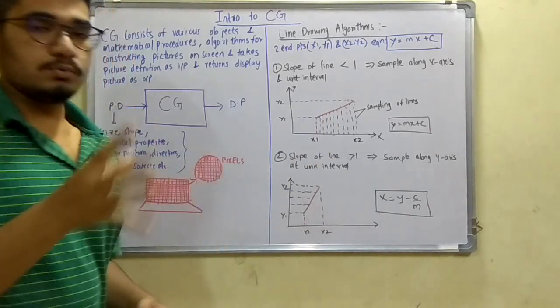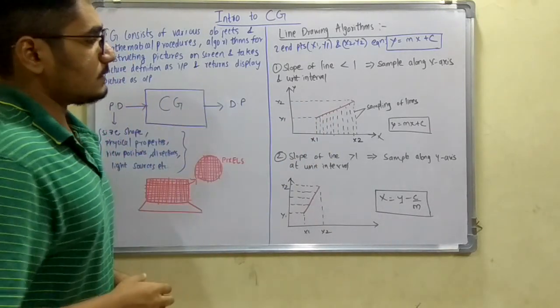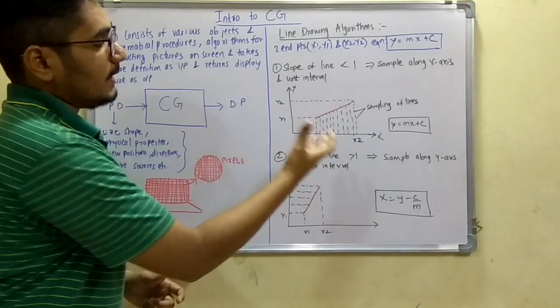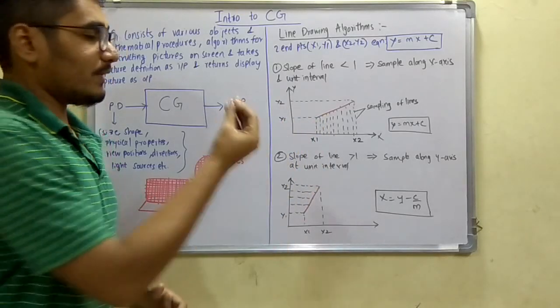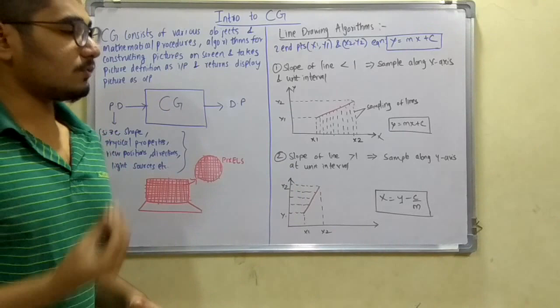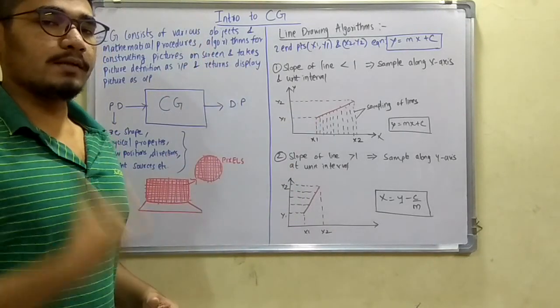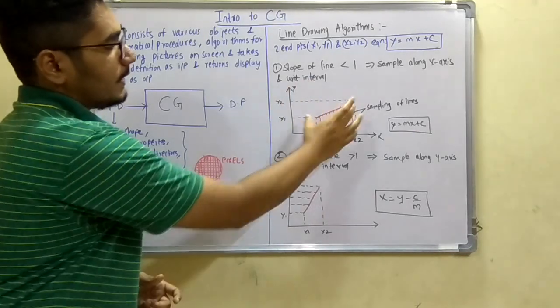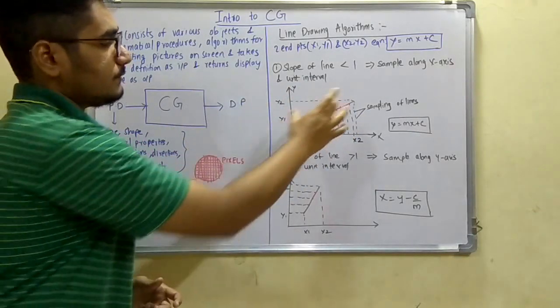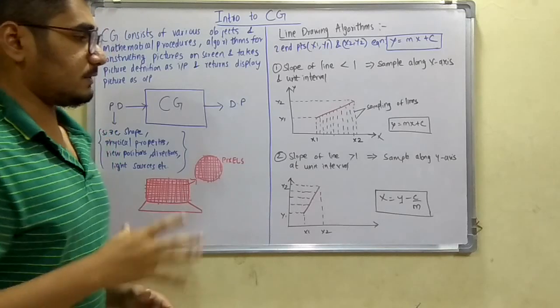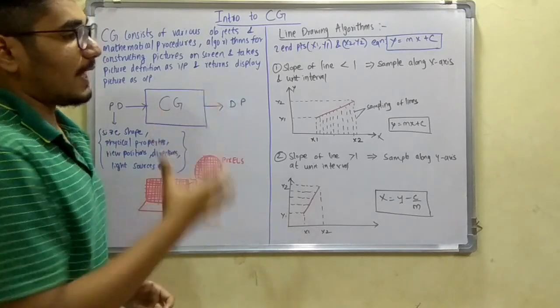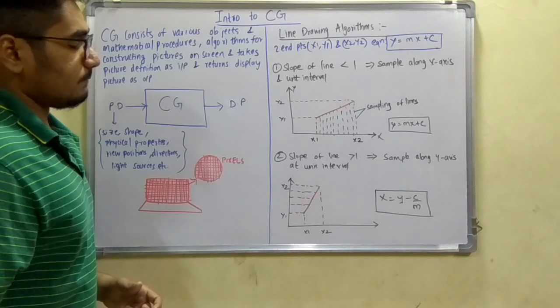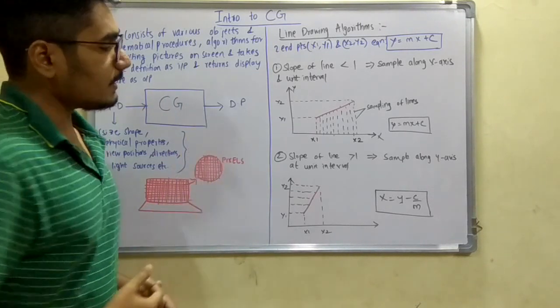This diagram depicts the slope of line less than one. As you can see, x1, x2 are two points on the x-axis and y1, y2 are two points on the y-axis. There are many intermediate points between x1 and x2. We sample these points as the line progresses and get a straight line. This is the mathematical equation: y = mx + c.